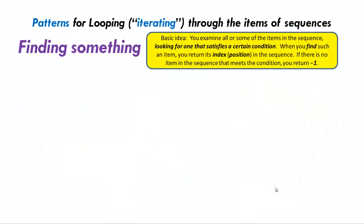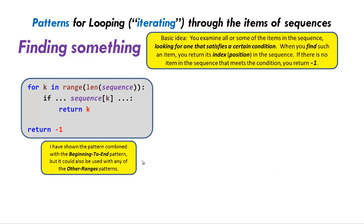Here's our next pattern — the find pattern — where you go through some or all of the sequence, typically all, and look for one that satisfies a condition. When you find that item, you return its index or position in the sequence. If there is no item that meets the condition, you return minus one to indicate so. Here's the code in Python: you have k going in a range through the whole sequence. If sequence k meets the condition, you return k — the place where you found the condition met. And if you get all the way through the loop without finding it, after the loop you return minus one.